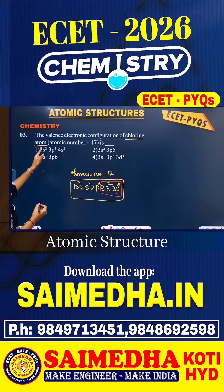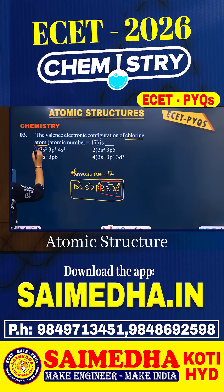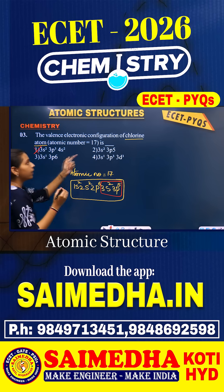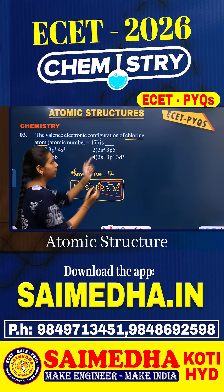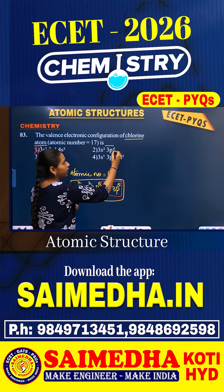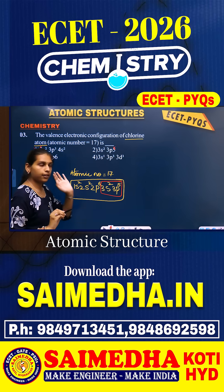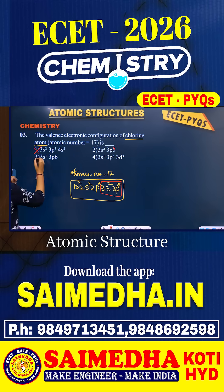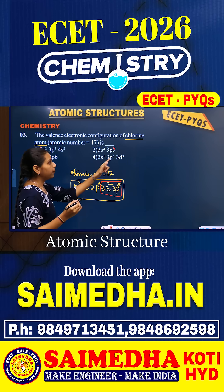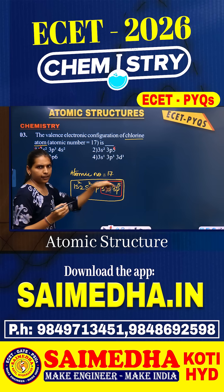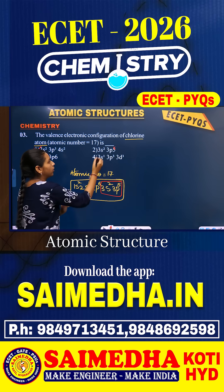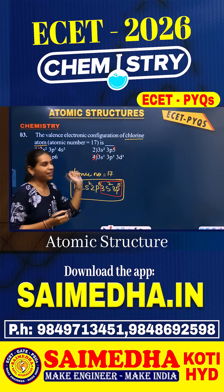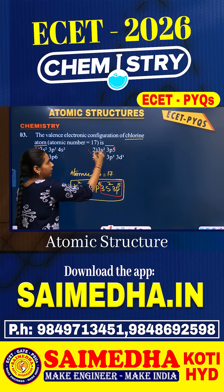Option 1 is 3s², 3p³, 4s² — no, that's incorrect. Option 2 is 3s², 3p⁵ — this matches. Let us still check the others. Option 3 is 3s¹, 3p⁶ — no. Option 4 is 3s¹, 3p³, 3d³ — no. So you can happily go with the second option.